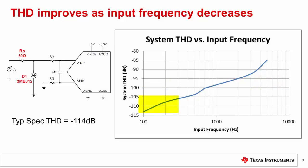This plot shows how the distortion gets worse as the input signal frequency increases. In this example, the THD near 100 hertz is very close to the specified typical THD for this device. The important point is that the distortion introduced by the nonlinear capacitances can often be minimized by reducing the input signal frequency. On the next slide, we will look at how the power rating of the TVS diode affects its capacitance.